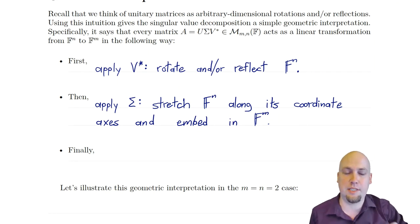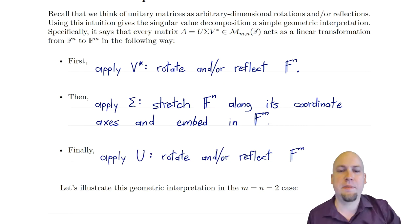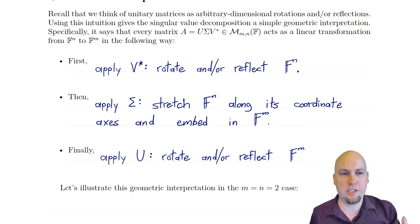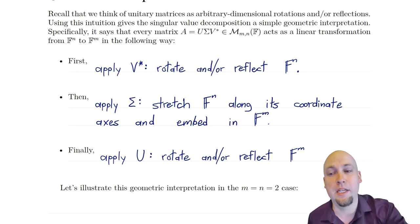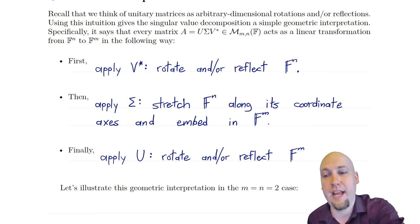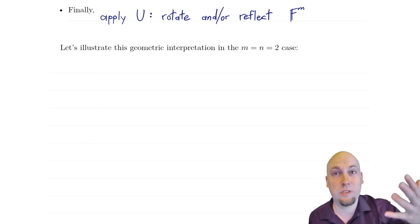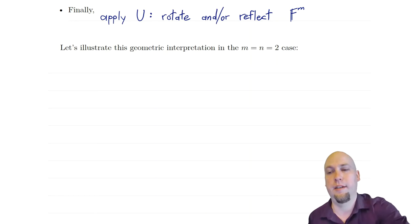So that's what sigma is doing: just a stretch and an embedding. Last but not least, you also have this final unitary U, and the intuition for unitaries is you're just rotating or reflecting space — but this time you're rotating or reflecting the output space F^m instead of F^n. So that's what a linear transformation looks like: a rotation and a stretch followed by another rotation, no matter what dimension you are in.